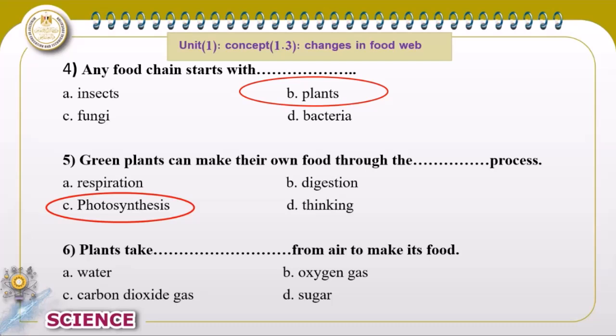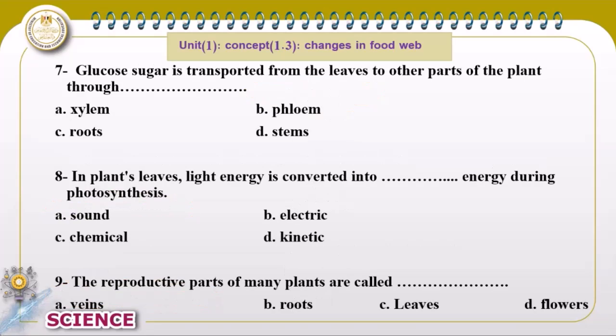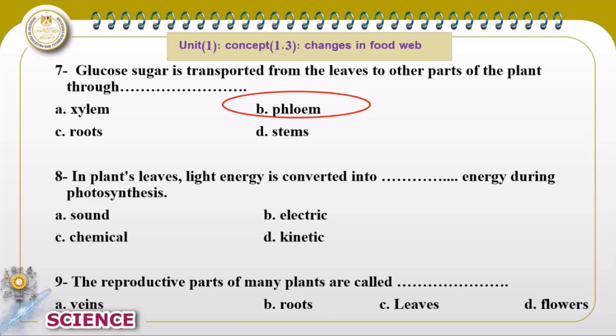Plants take carbon dioxide gas from the air to make their food. Glucose sugar is produced and is transported from the leaf to other parts of the plant through tubes — the veins — which transfer the food from the leaf to all parts of the plant.